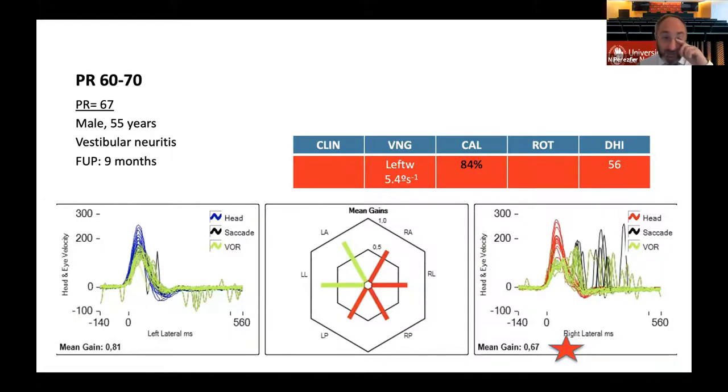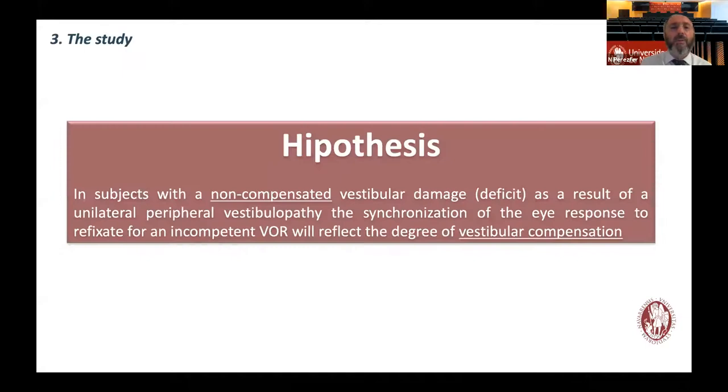And this is a PR index of 67. You can see this is a right sided vestibular neuritis nine months after. This is a patient doing bad. He's feeling unstable. The caloric test is very strong paresis, rotatory chair was abnormal. So we were trying to make an evaluation of the disorganization of the presentation of saccades. The PR index is an assessment of the presentation along the time of the saccade.